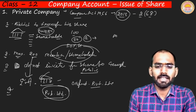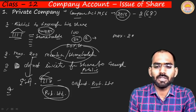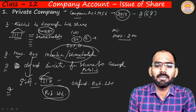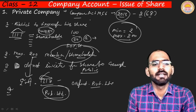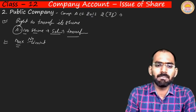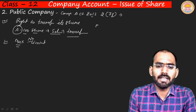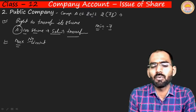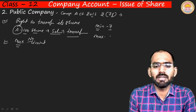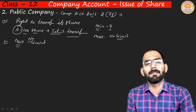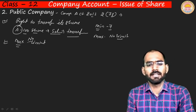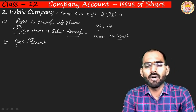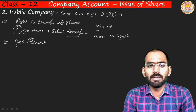In a private company, the maximum members are 200 and the minimum is 2. But in a public company, the minimum is 7 and there is no maximum limit. The company can issue as many shares as it wants in the market — any number of members can be part of a public company.